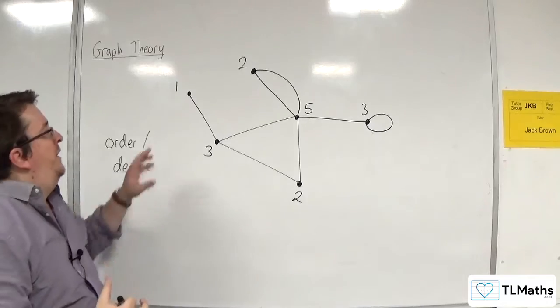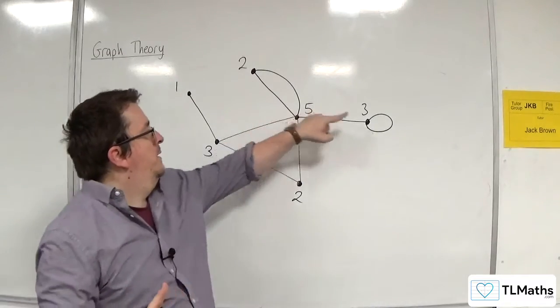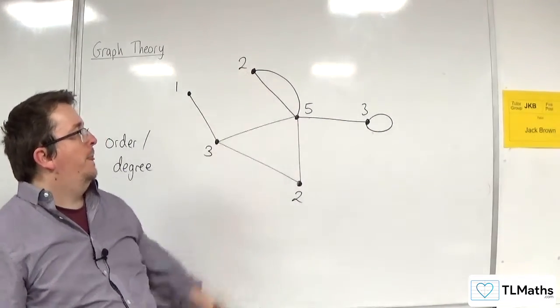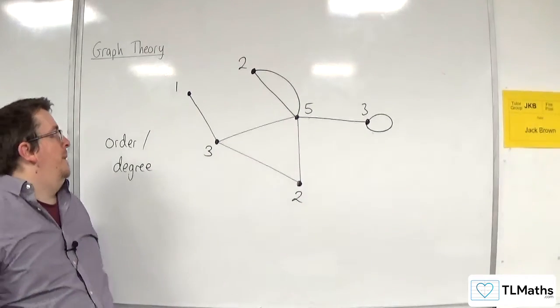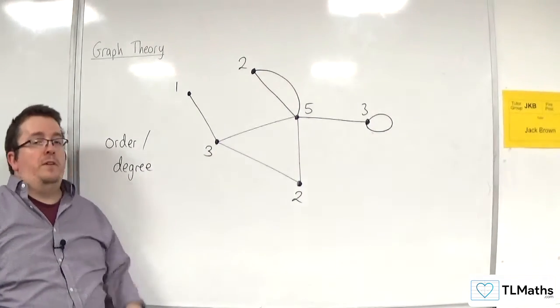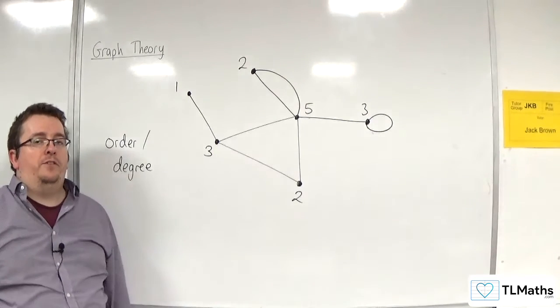So you can have vertices with odd order and you can have vertices with even order. So that is what we mean by the order or degree of a vertex. Although we use the word degree, it's got nothing to do with angles.